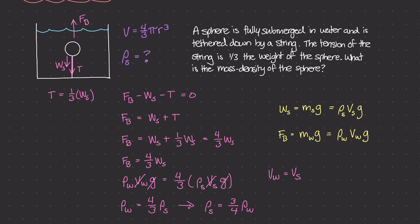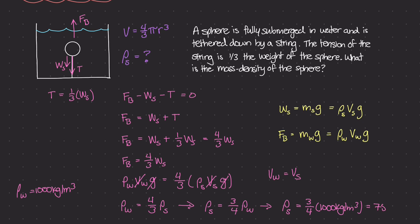If we plug in numbers: taking the mass density of water as 1000 kg/m³, the mass density of the sphere equals three-quarters times 1000 kg/m³, which equals 750 kg/m³. So that is the mass density of this sphere.